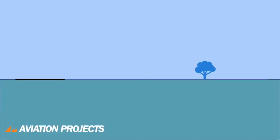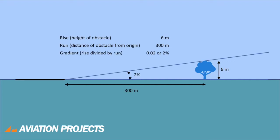In this example, the obstacle, which is a tree, is 6 metres high. Assuming the ground is level between the runway and the tree at a distance of 300 metres, the gradient to the top of the tree is 2%. Note that the vertical scale is exaggerated.